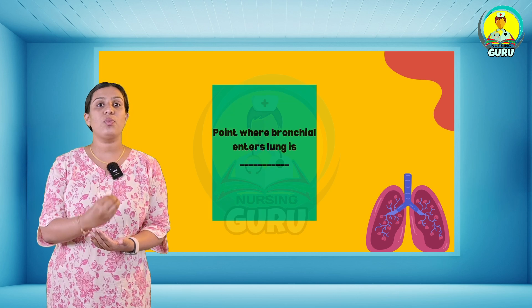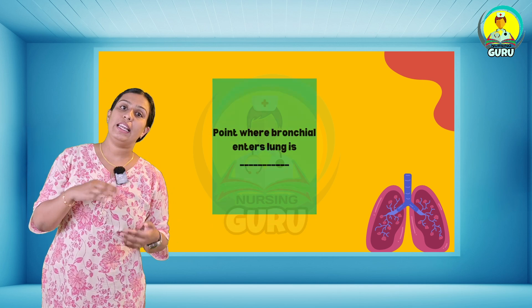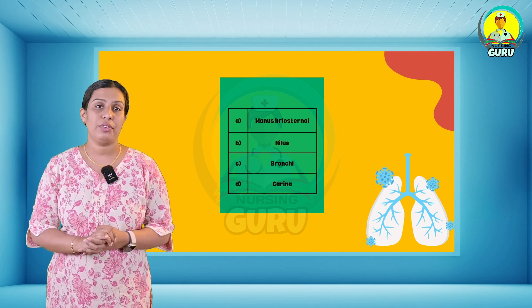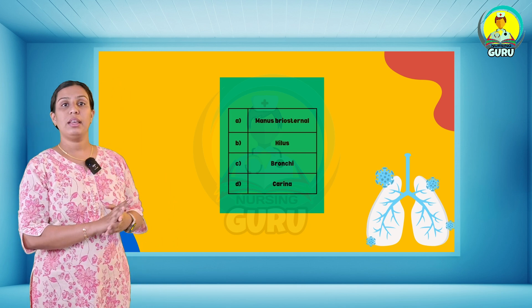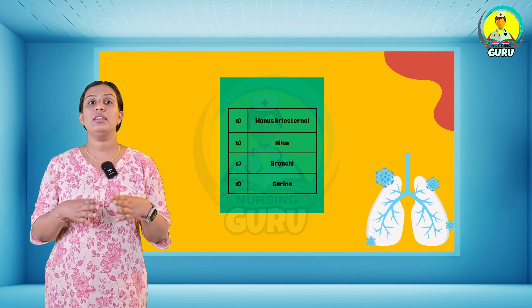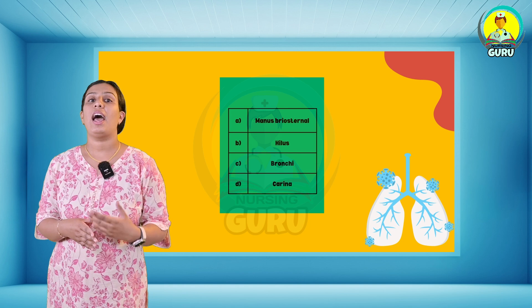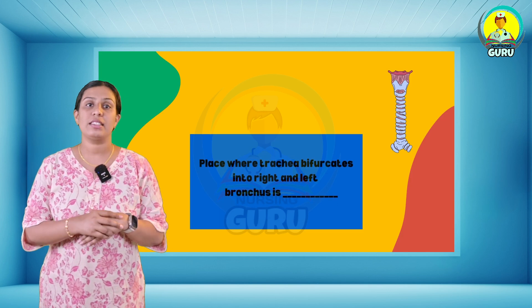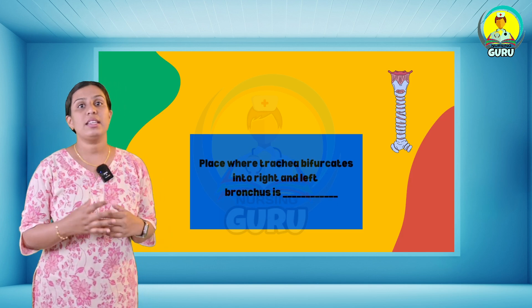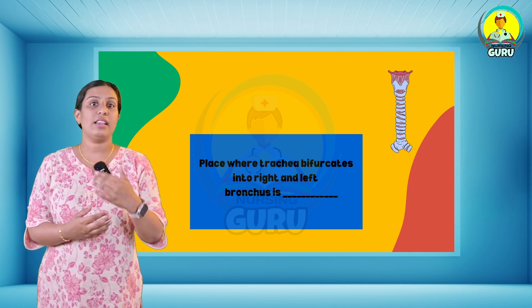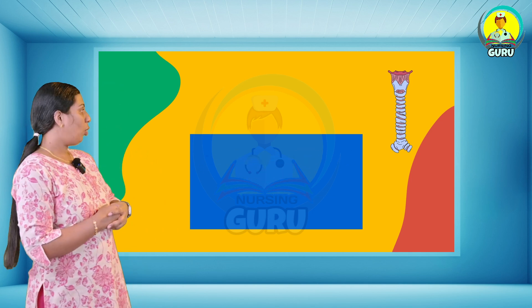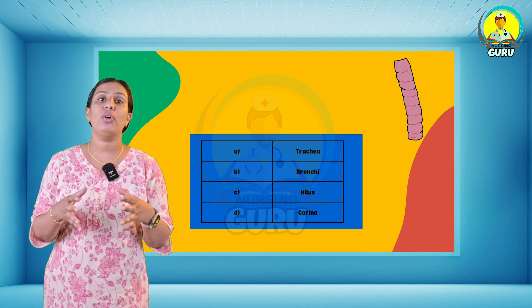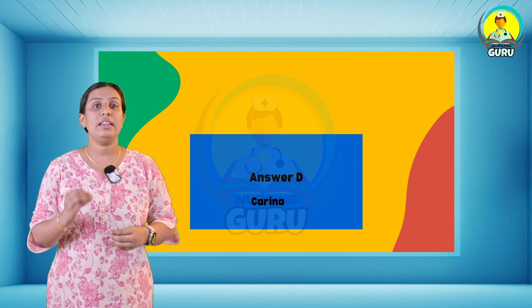Eighteenth question: the point where the bronchus enters into the lungs is called what? Four options are shown, and the answer is option B. Nineteenth and last question: the place where the trachea bifurcates into the right and left bronchus is called what? Options are trachea, bronchi, hilum, and carina. The right answer is option D — carina.